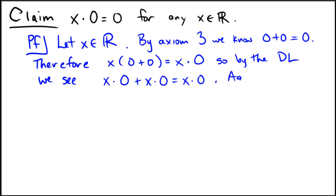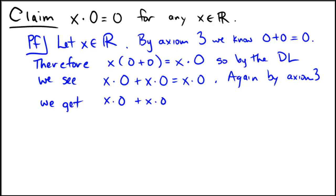Now, again by Axiom 3 — the additive identity — since adding 0 leaves things unchanged, we can rewrite the right-hand side: x times 0 plus x times 0 is equal to x times 0 plus 0.